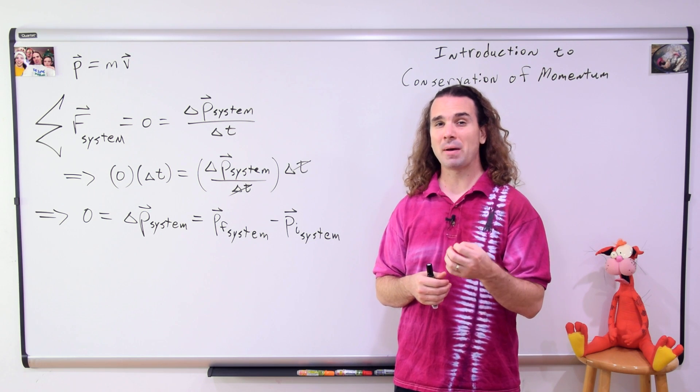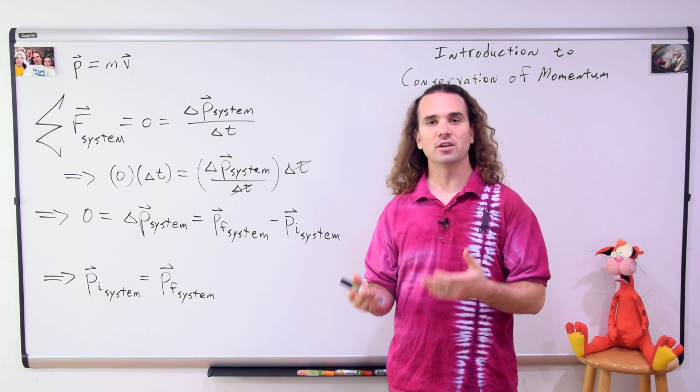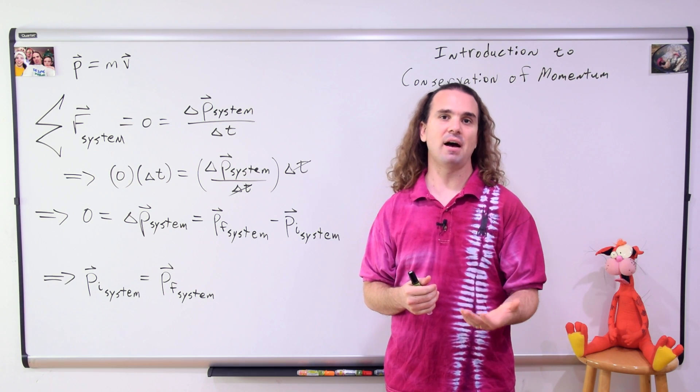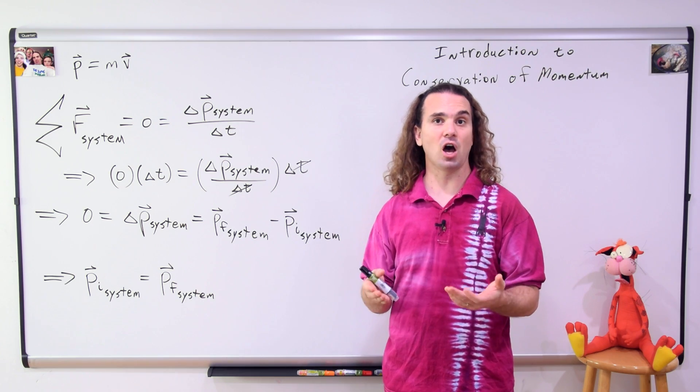And we can add the initial momentum of the system to both sides to get the initial momentum of the system equals the final momentum of the system. This concept is called conservation of momentum.